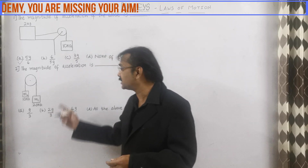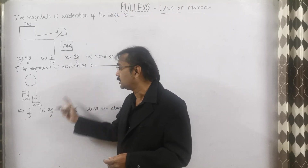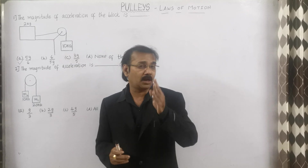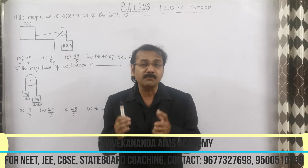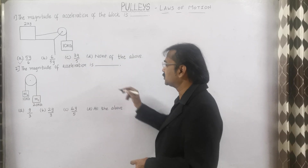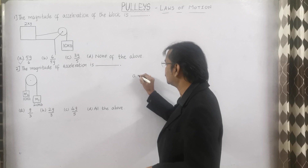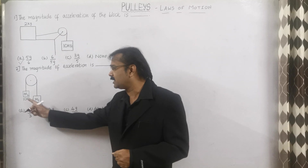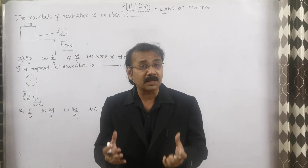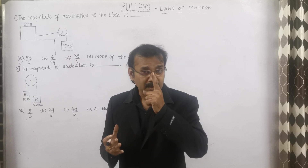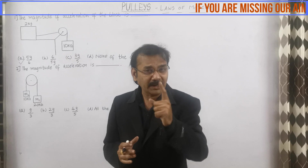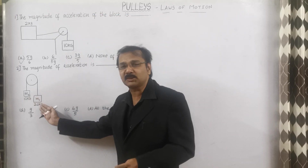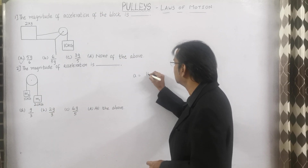There are 4 options: G by 3, 2G by 3, 4G by 5, and option D. How to capture the answer within a few seconds in a single step? Since the question asks for acceleration, write A is equal to. Then, just go with the difference of these 2 masses since both masses are hanging down in the pulley. Just subtract the bigger value minus the smaller value: 20 minus 10 equals 10.